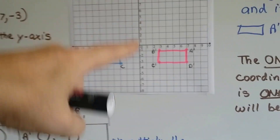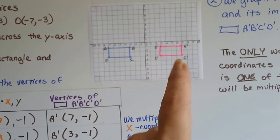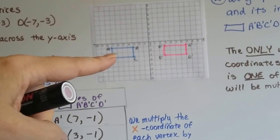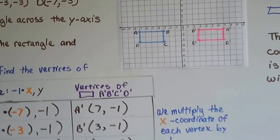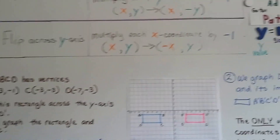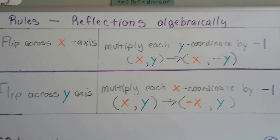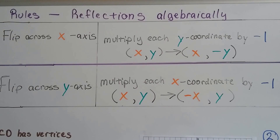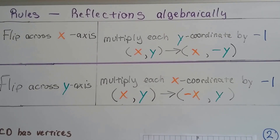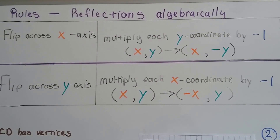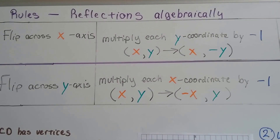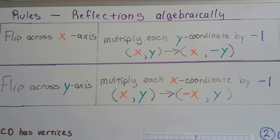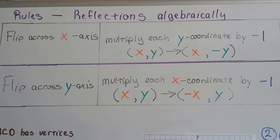Because we were going across the y-axis, we multiplied the x-coordinate by negative 1. If we were going across the x-axis, we would have multiplied the y by negative 1 — it would have been the opposite. I'm going to pause here so you can write this down and copy it into your notes, because this is really important for how to do reflections algebraically. You want to have this in your notes.